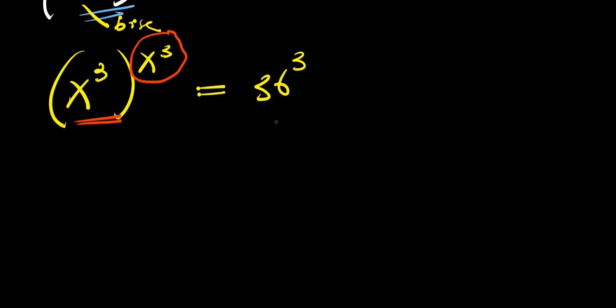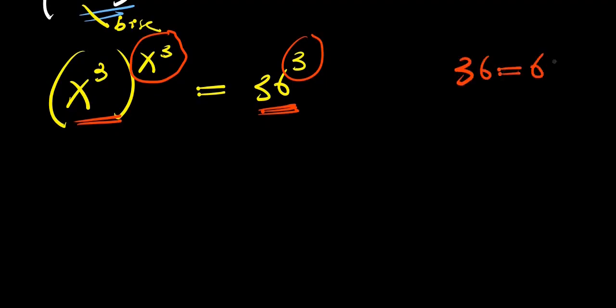We need to make sure that what we have here is exactly what we have at the exponent. To achieve that, we are going to have 36, and this equals 6 times 6, which is 6 to the power of 2.